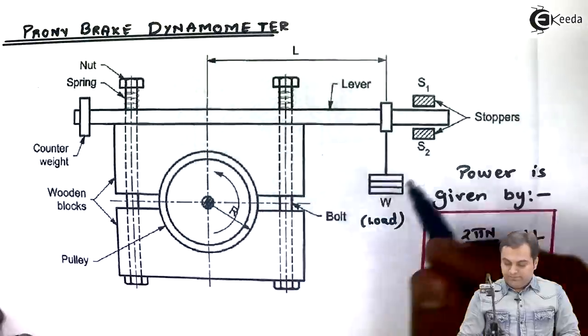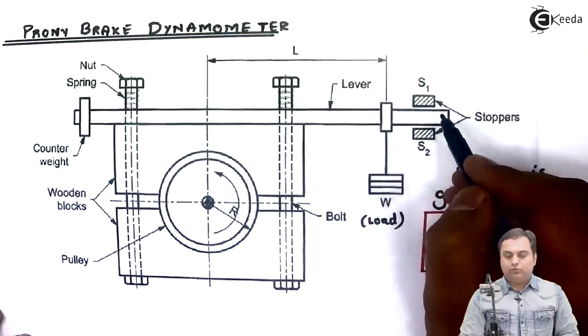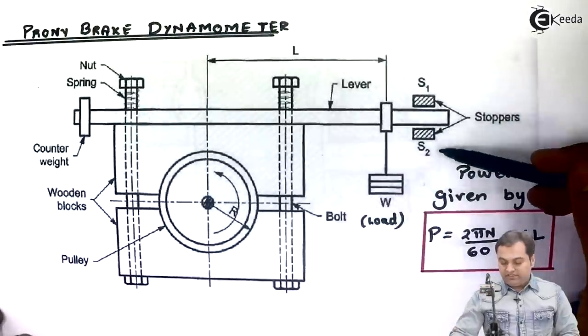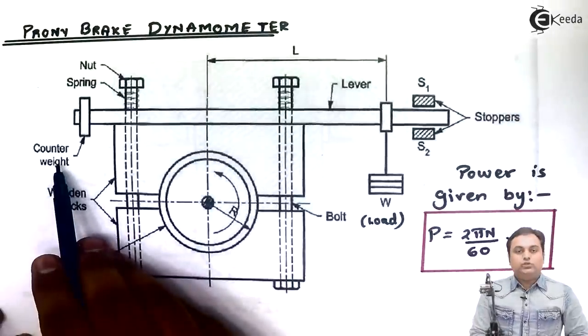Stoppers are provided to stop or restrict the motion of the lever from going to extreme conditions - that is the lever should not move in extreme downward or upward direction. Then we have counterweight to avoid the vibrations of the lever.